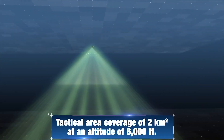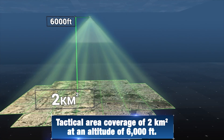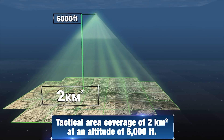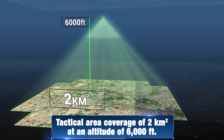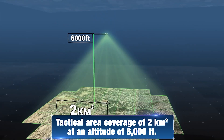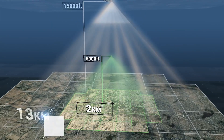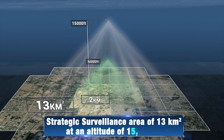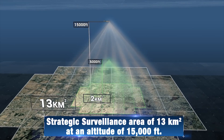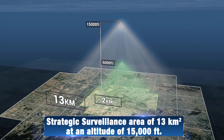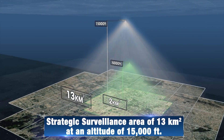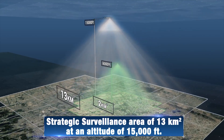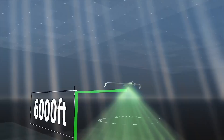A tactical altitude of 6,000 feet will provide a 2 square kilometer surveillance area. A strategic altitude of 15,000 feet will provide a 13 square kilometer surveillance area.